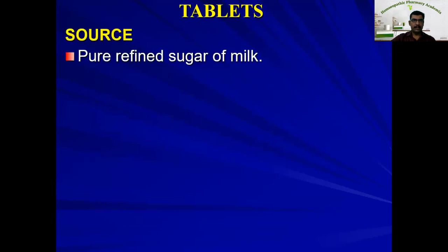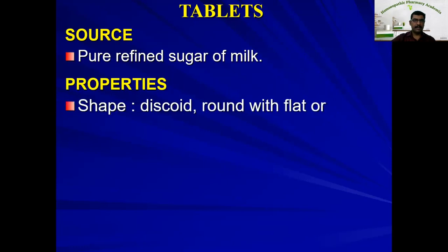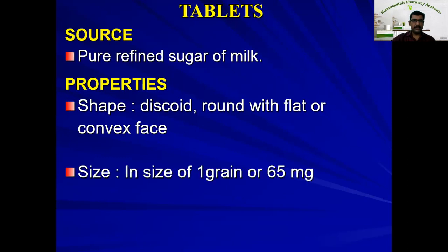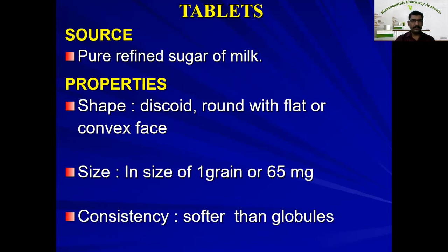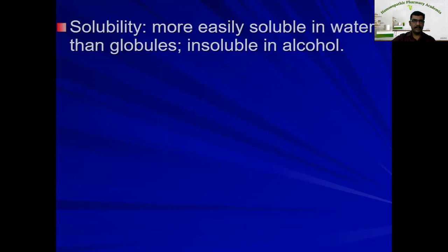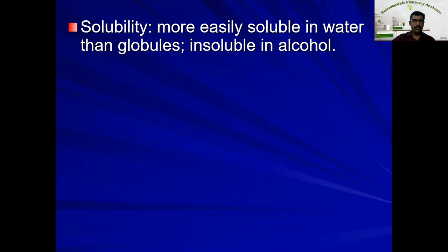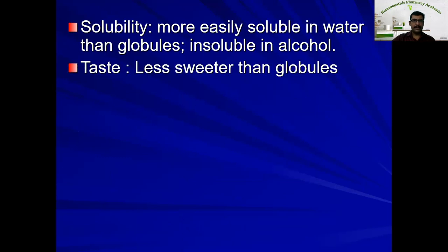The next important solid vehicle is tablets. Tablets are prepared from pure refined sugar of milk (lactose). Properties: size varies from one grain, two grain, three grain, or five grain — where one grain equals 65 milligrams. Consistency is softer than globules. Solubility: more easily soluble in water than globules, and insoluble in alcohol. They are less sweet than globules.